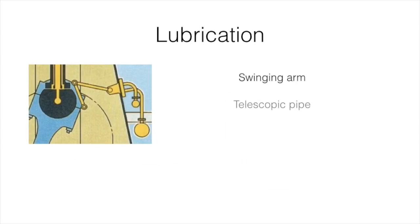On a two-stroke crosshead engine, lubricating oil is supplied to the main bearings, camshaft, and camshaft drive.